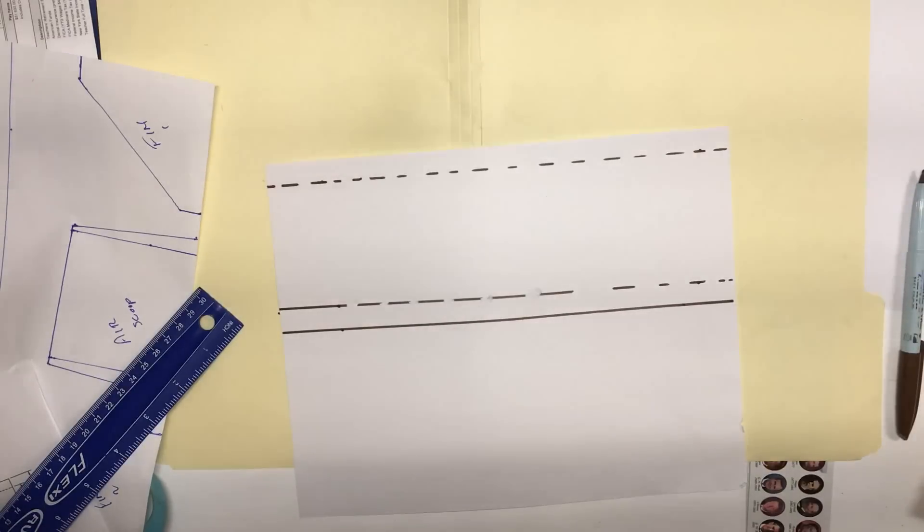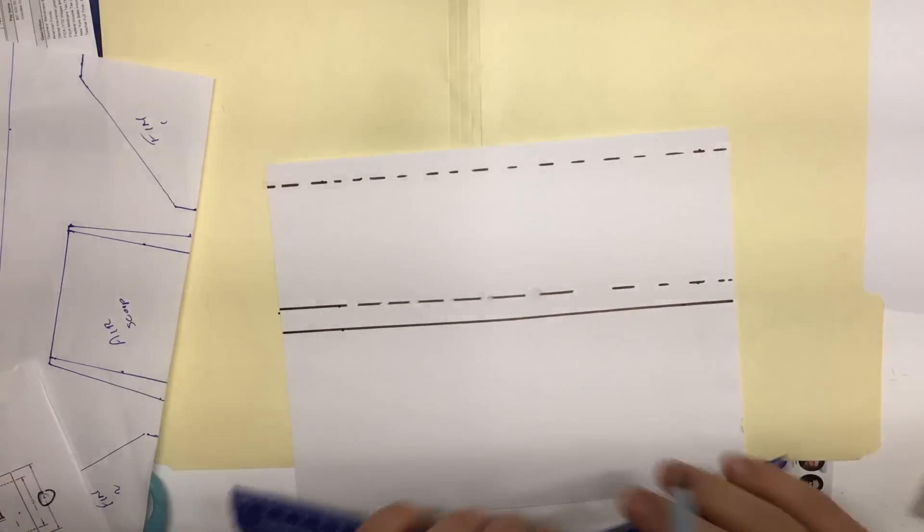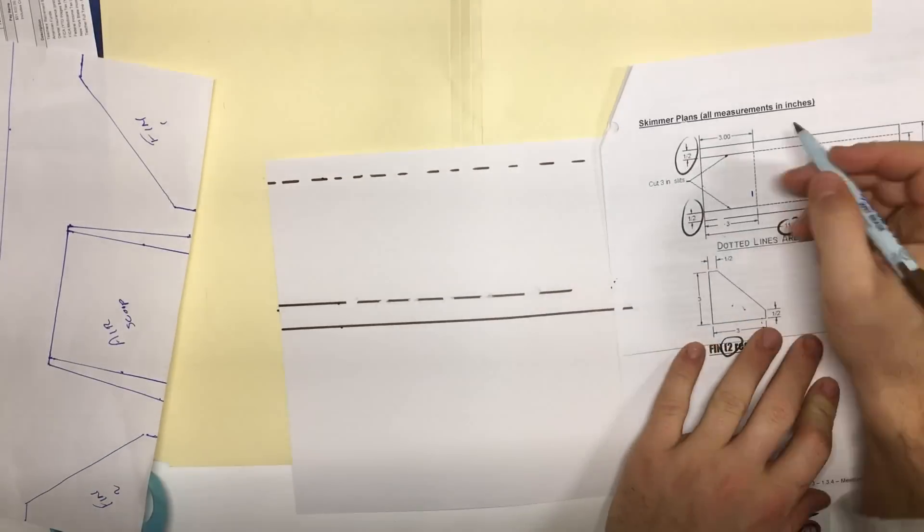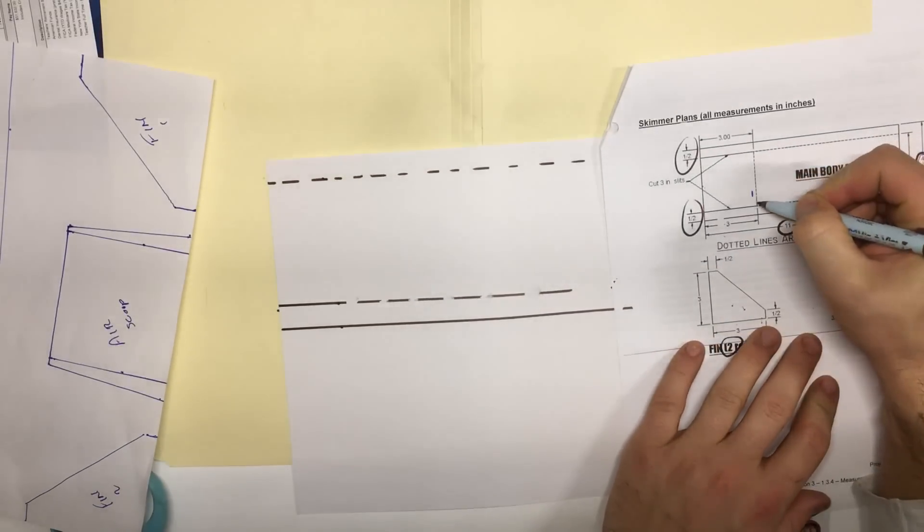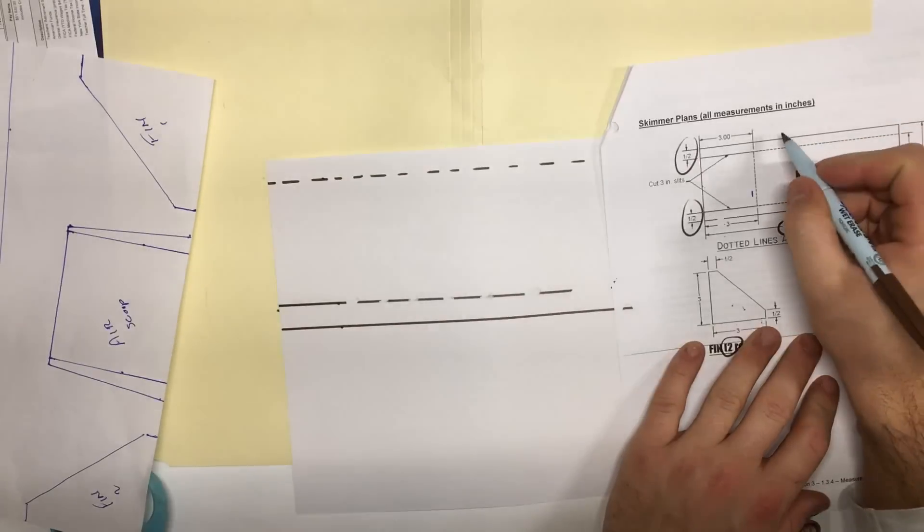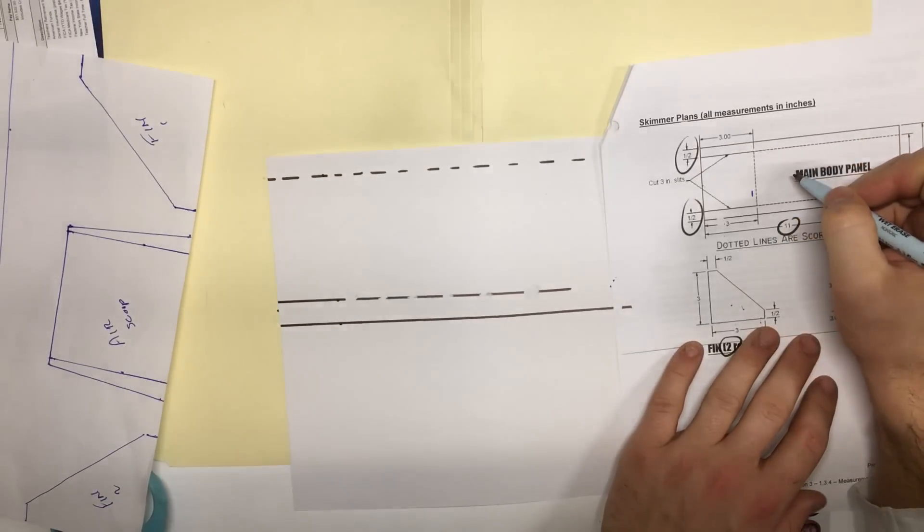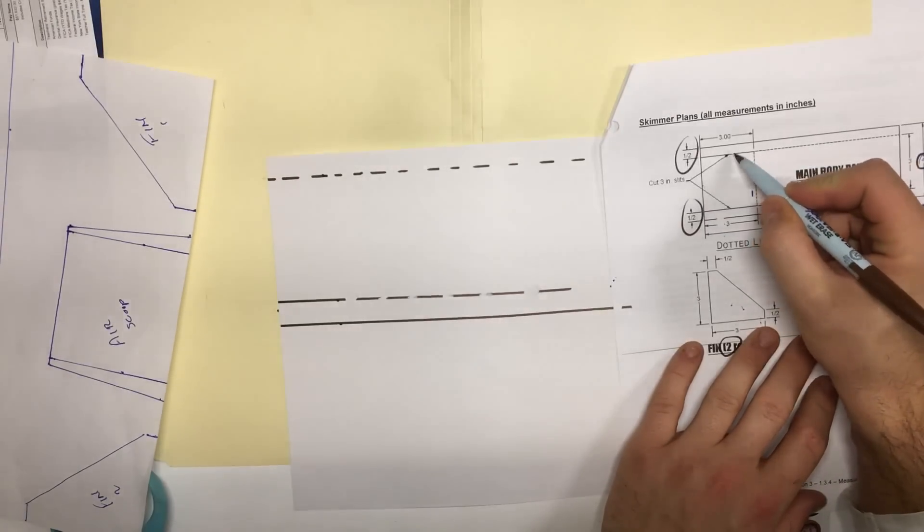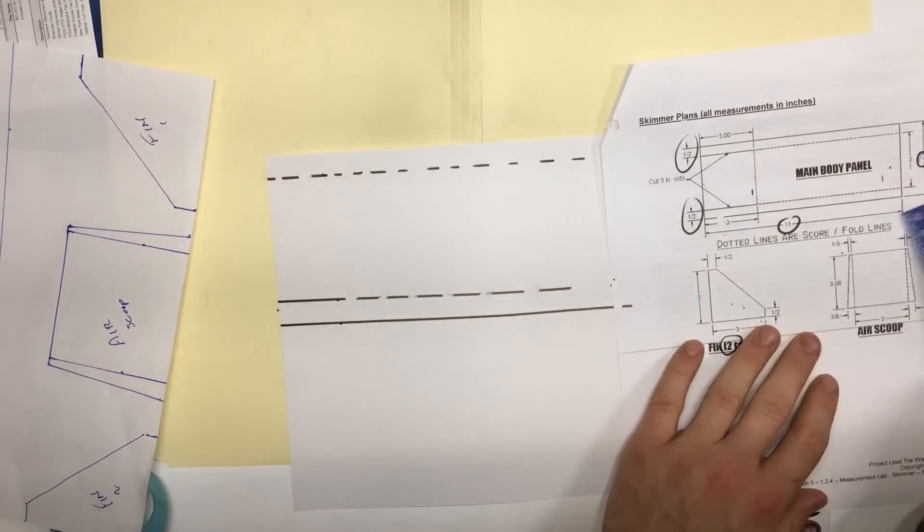My mistake. Hopefully that dries up in a matter of seconds. All right. Next, I'm going to be drawing the 3-inch line across the front of the page. You'll notice that the 3-inch line is also dotted. That is going to be very important during our assembly of our skimmers. And after the 3-inch line, it becomes a solid line. So that's what we're going to do right now.